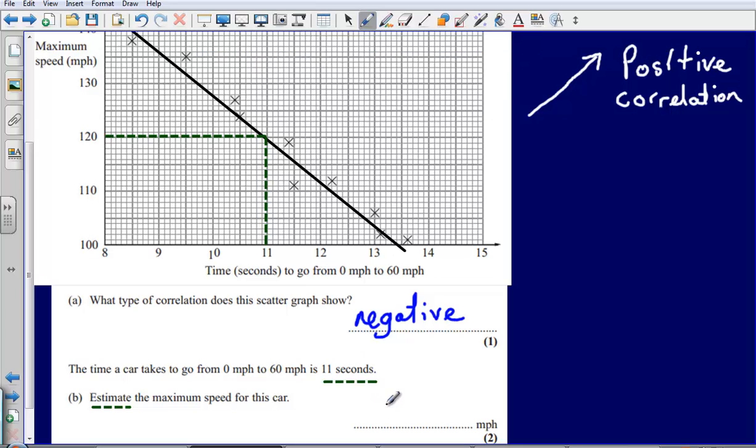And so our answer here would be a hundred and twenty miles per hour, just taking that from the fact that if I go to the line and go across to the maximum speed, it comes out at a hundred and twenty.